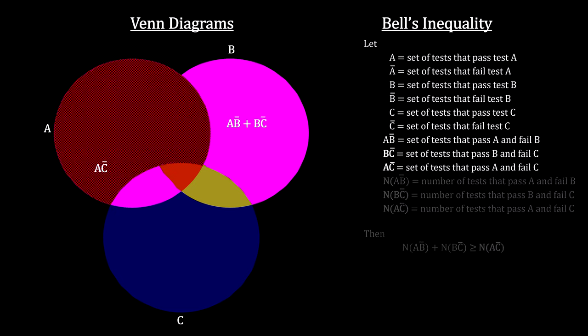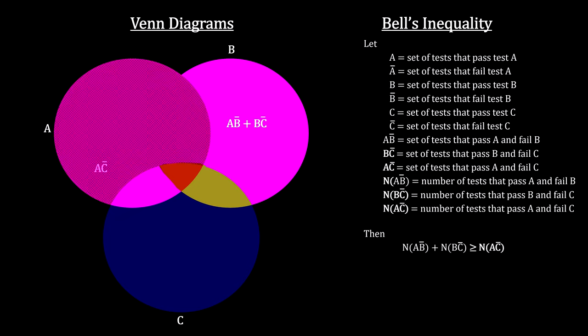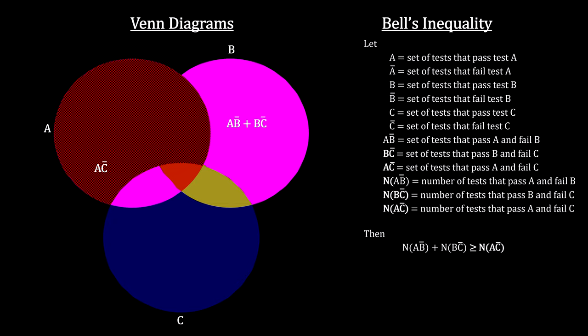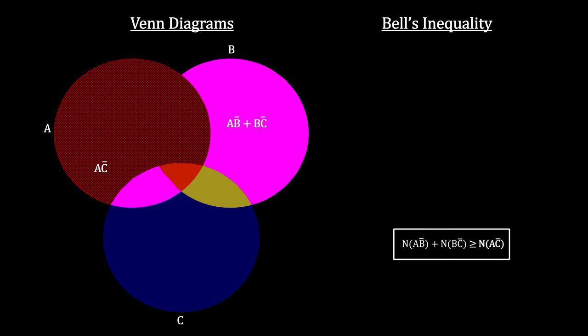From set theory, we know that the number in A-not-B plus the number in B-not-C must be greater or equal to the number in A-not-C. This is the famous Bell inequality.